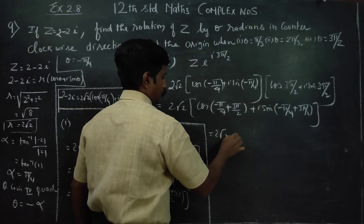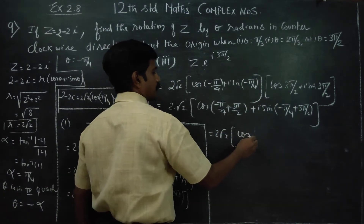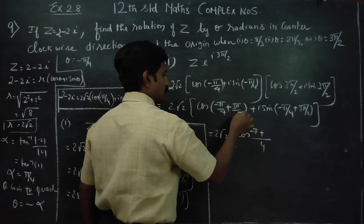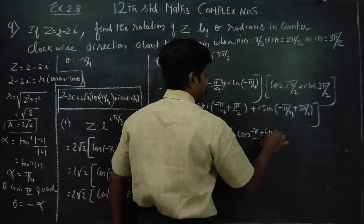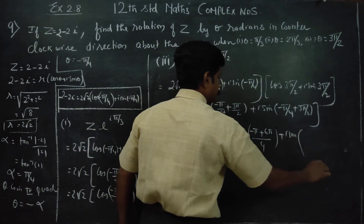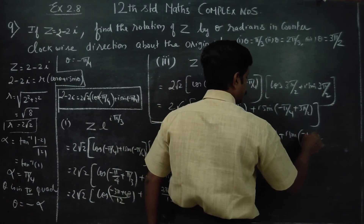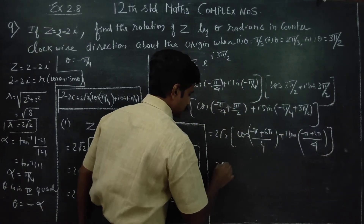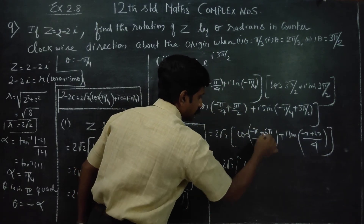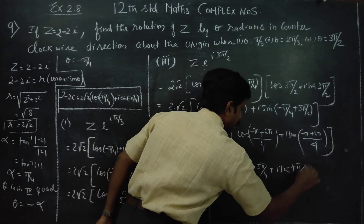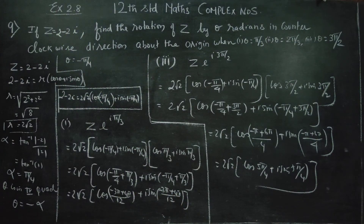2√2·cos of (LCM is 4): −π + 6π over 4, plus i·sin of (−π + 6π)/4. That gives 5π/4. Therefore your final answer is 2√2·cos(5π/4) + i·sin(5π/4). This is the new polar form position after rotation. Thank you.